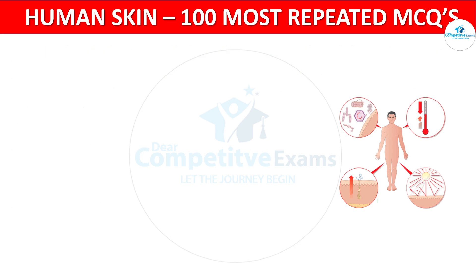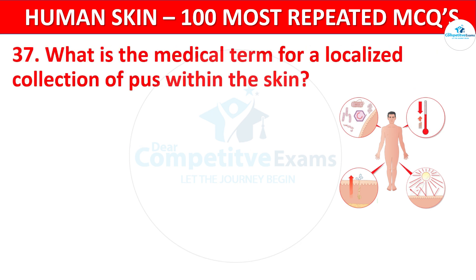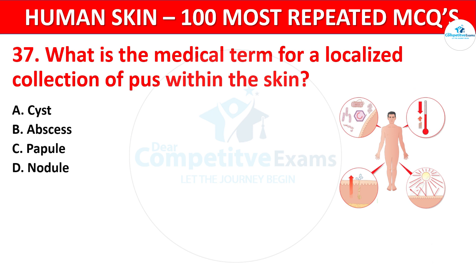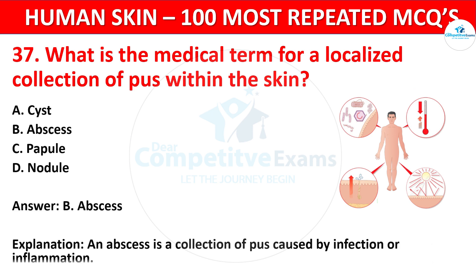Question 37. What is the medical term for a localized collection of pus within the skin? Your options: Cyst, Abscess, Papule, or Nodule. The correct answer is Abscess. An abscess is a collection of pus caused by infection or inflammation.